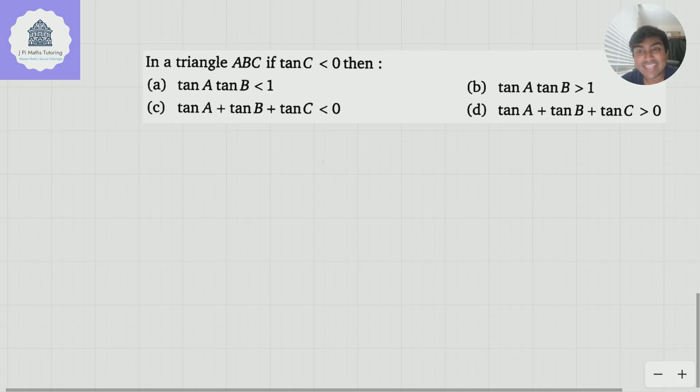Let's have a look at this question. In triangle ABC, if tan of C is negative, then: (a) tan A tan B < 1, (b) tan A tan B > 1, (c) tan A + tan B + tan C < 0, or (d) tan A + tan B + tan C > 0? This is one of those questions where more than one answer can be correct. Do you have a go at this problem? I'm going to dive right in.